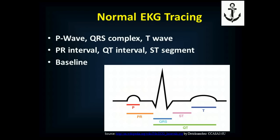In a normal EKG tracing, you see a P wave, a QRS complex, a T wave, a PR interval, a QT interval, an ST segment, and the baseline. The flat line coming in and going out of that complex is the baseline. The first upward deflection is the P wave. There's then another flat line, then sometimes a downward deflection called the Q, followed by an upward deflection called the R wave, and another downward deflection called the S wave — that's the QRS complex. Between the S wave and the next upward deflection is the ST segment, and that upward hump is the T wave. This is the PQRST complex.